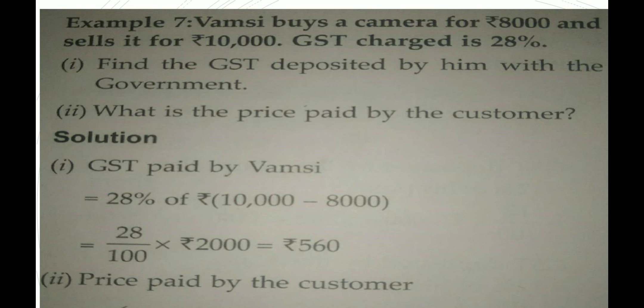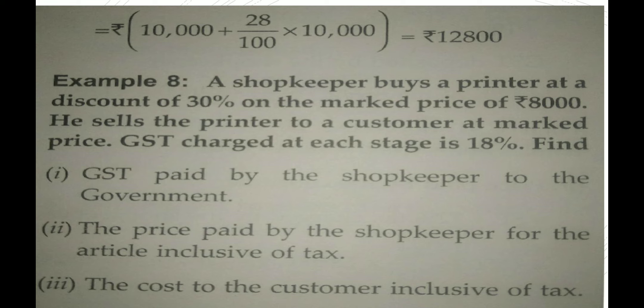GST paid by Bhamsi = 28% of (Rs. 10,000 minus Rs. 8000), that is 28% of Rs. 2000 = Rs. 560. Price paid by the customer = Rs. 10,000 plus 28% of Rs. 10,000 = Rs. 12,800.